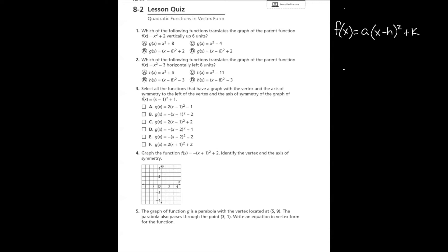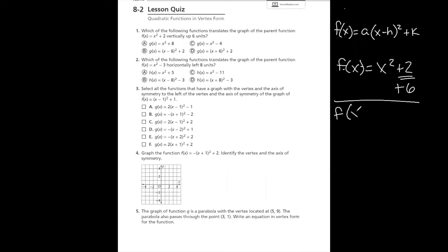Number 1 asks which function translates the graph of the parent function f of x equals x squared plus 2 vertically up 6 units. Looking at vertex form, it's the k value that determines up or down movement. Our parent function already has k equal to positive 2, meaning it's up 2. Since we want to move up another 6 units, we add 6 to 2, giving us a new function f of x equals x squared plus 8. The correct answer is letter A.